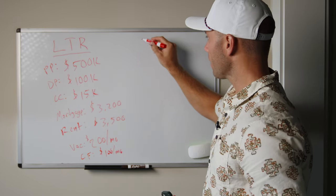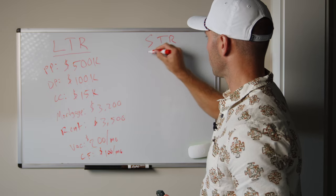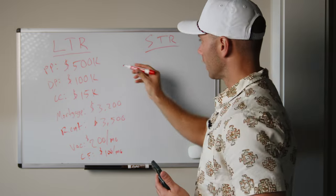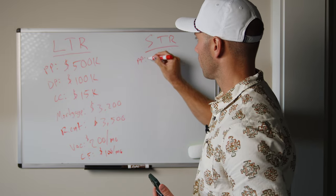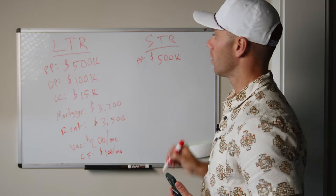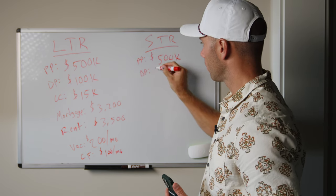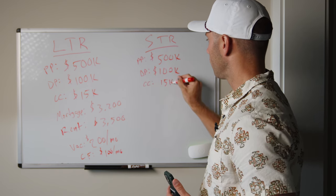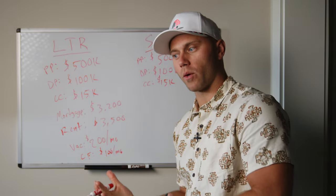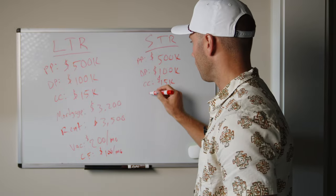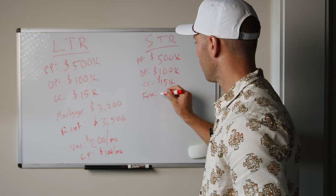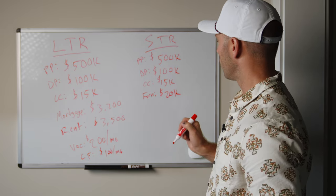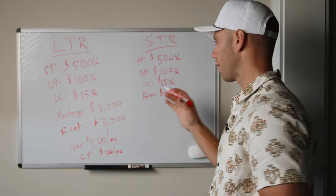Now, if we do the same example as a short-term rental — remember, this is Airbnb, we're renting per night, not per month — same purchase price of $500,000, same down payment of $100,000, closing costs of $15,000. Because it's a short-term rental, we also have to pay for furniture — let's say $20,000 to furnish the place. So all in, we're at $135,000.